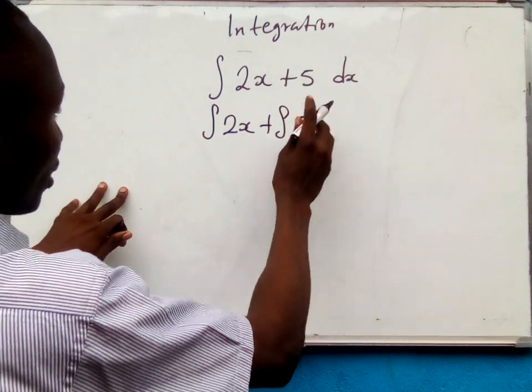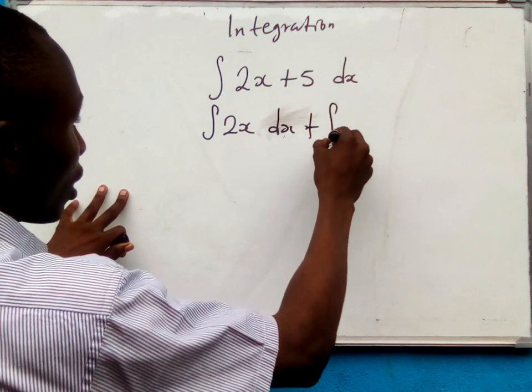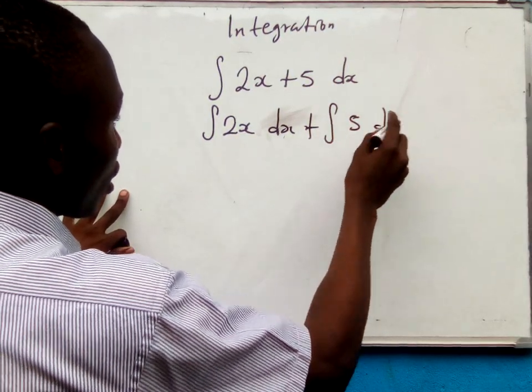Now remember that all this is the dx. You are integrating with respect to x. Plus anti-derivatives of 5, all with respect to dx.